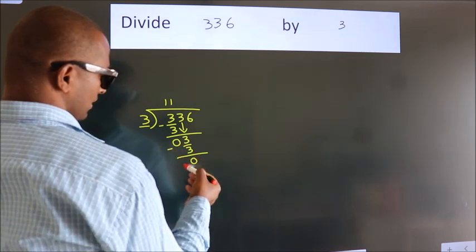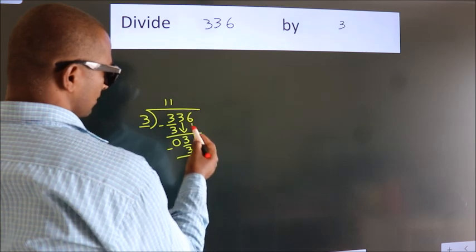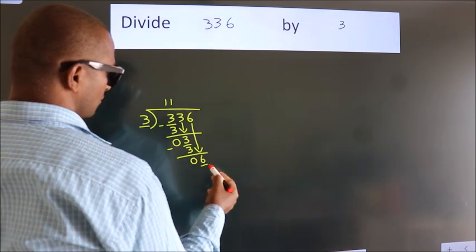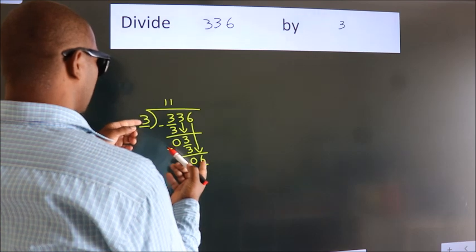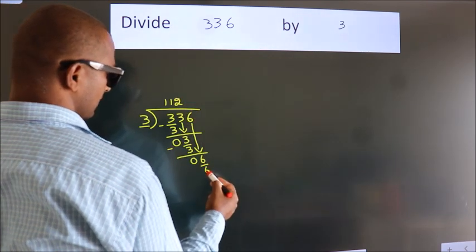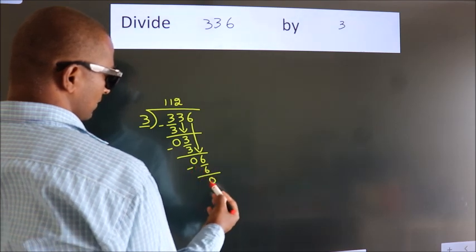After this, bring down the beside number. So, 6 down. When do we get 6? In the 3 table, 3 times 2 is 6. Now, we subtract. We get 0.